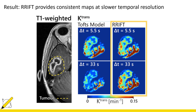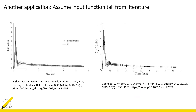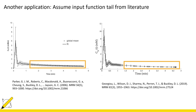Another thing to note is that the tail part of the input function is not only easier to measure but also more consistent across patients. These two input functions from two different studies are population averages where the error bars indicate the standard deviation. The error bars are largest around the peaks, whereas in the tails the error bars are quite small. This indicates that rather than measuring an input function tail, we could assume one from literature and it might work just as well. We tried this in the study and got pretty good agreement between using a measured input function tail versus a literature-based input function tail, both using the RIFT method.